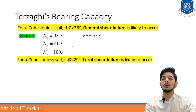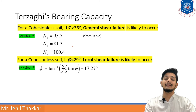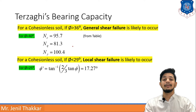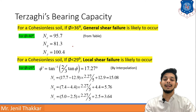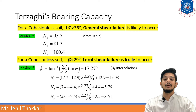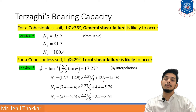For a local shear failure case with φ = 25°, we calculate φ' = tan⁻¹(2/3·tan 25°) = 17.27°. Then N_C, N_Q, and N_γ are obtained by interpolating between the table values at φ = 15° and φ = 20°. By interpolating between those values and adding the proportional contribution, you can determine the bearing capacity factors for φ' = 17.27°.